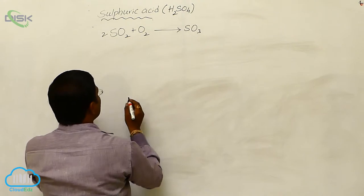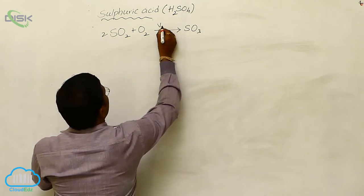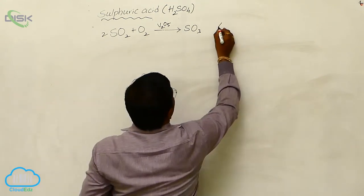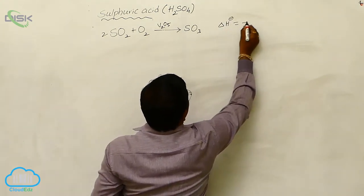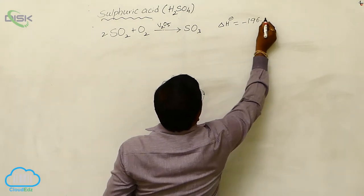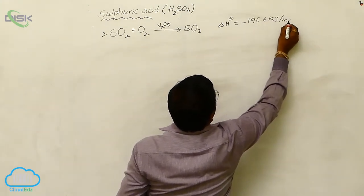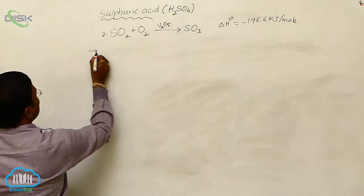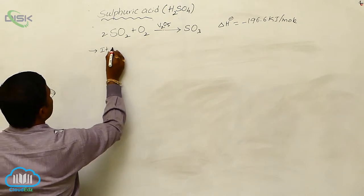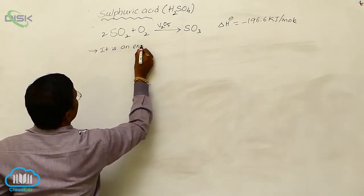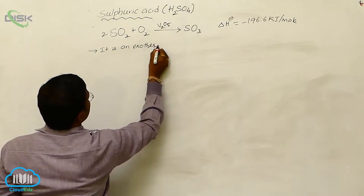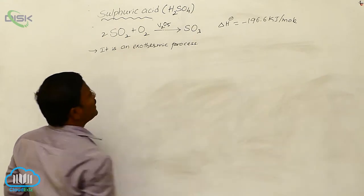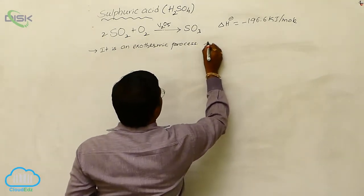Sulfur dioxide undergoes oxidation in the presence of vanadium pentoxide (V2O5) to produce sulfur trioxide. It releases 196.6 kilojoules per mole of energy during the process. It is an exothermic and reversible process.